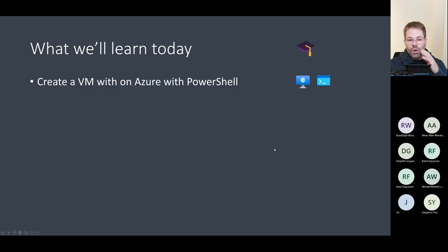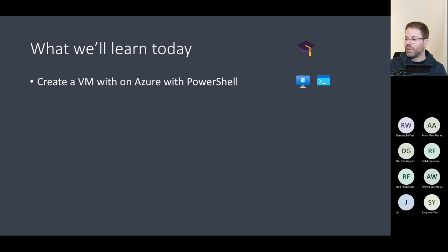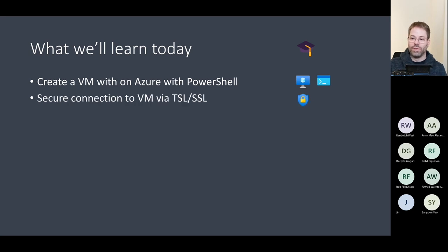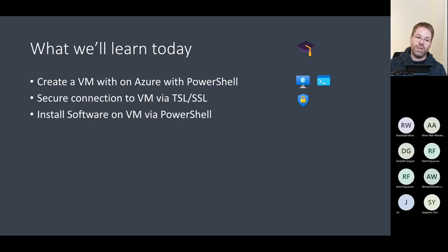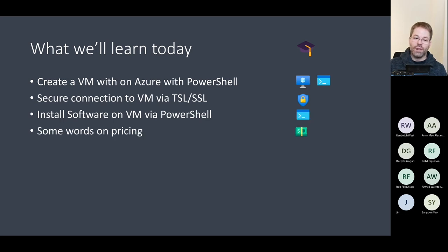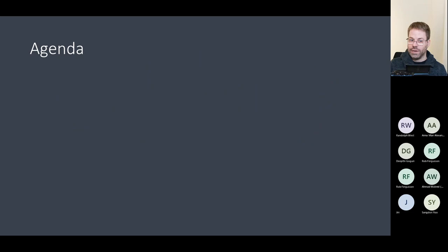So what are we going to learn today? We will create a virtual machine on Azure with PowerShell — basically something automated, infrastructure as code. We will create a secure connection to the VM via TLS/SSL, and we will install software on the VM with PowerShell as well. We will also have some words on pricing, depending on how fast we get through the slides.